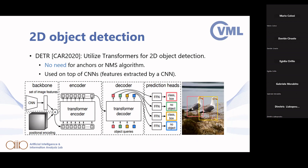A transformer-based algorithm called DETR utilizes a transformer for 2D object detection. An important advantage is that it does not need anchors, object proposal regions, or non-maximum suppression — it directly outputs bounding boxes. The way it calculates these bounding boxes is complex, but it demonstrates that transformer architectures are now used everywhere and often achieve the best performance compared to CNN or other DNN architectures.